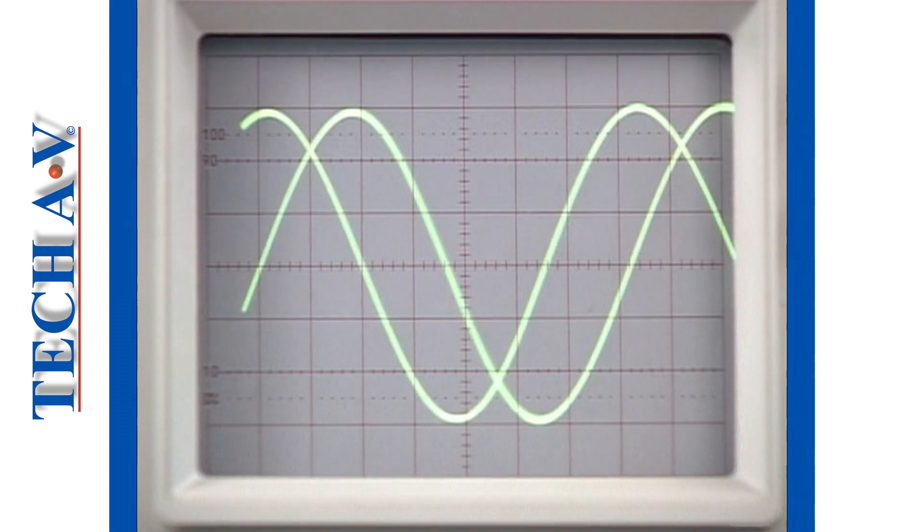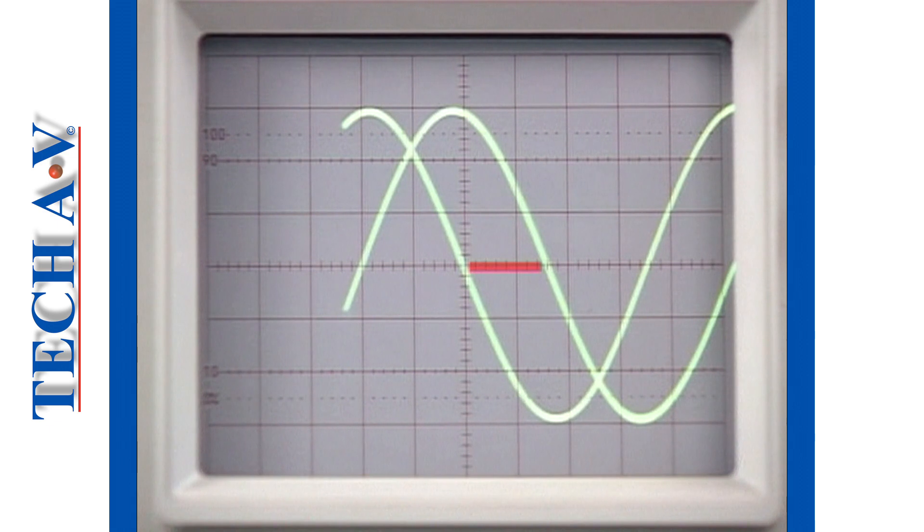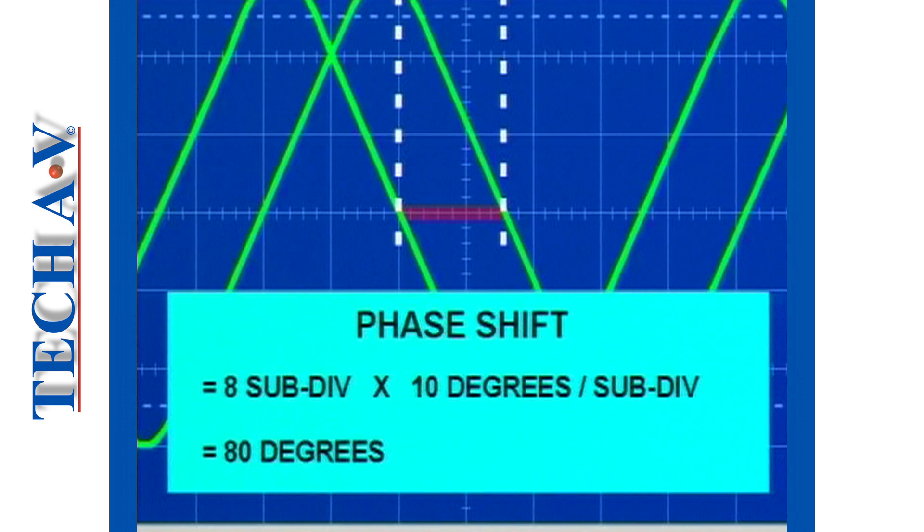Now measure the horizontal distance separating the two signals using the graduations on the horizontal center line as an accurate measuring scale. This distance represents the phase shift between the two signals. The calculation is as follows: 8 subdivisions times 10 degrees per subdivision equals a phase shift of 80 degrees.